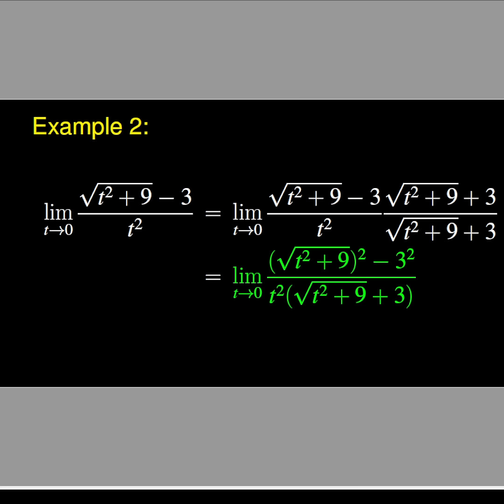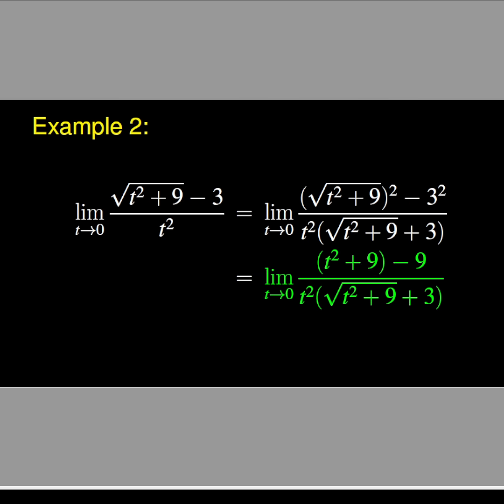Consequently, the numerator becomes (√(t² + 9))² - 3², and the denominator remains the same. Using the properties of the square root, the numerator becomes t² + 9 - 9, which is just t², because 9 and -9 cancel each other.